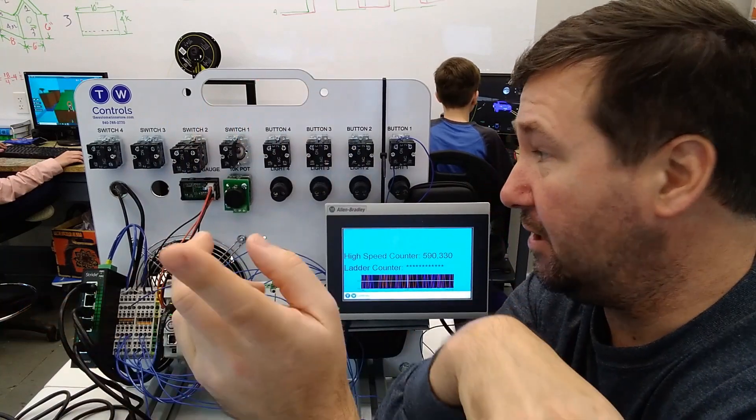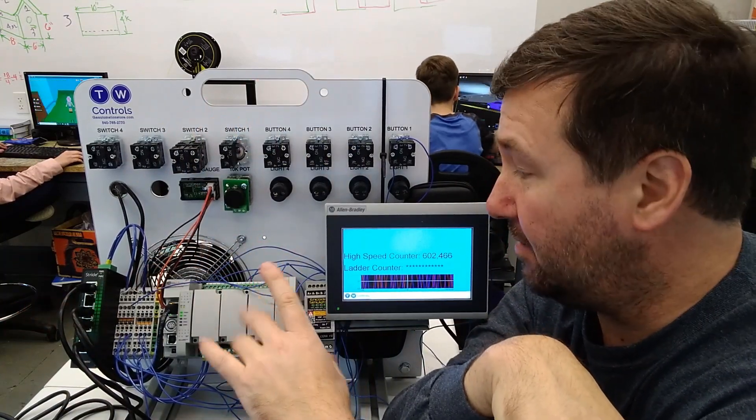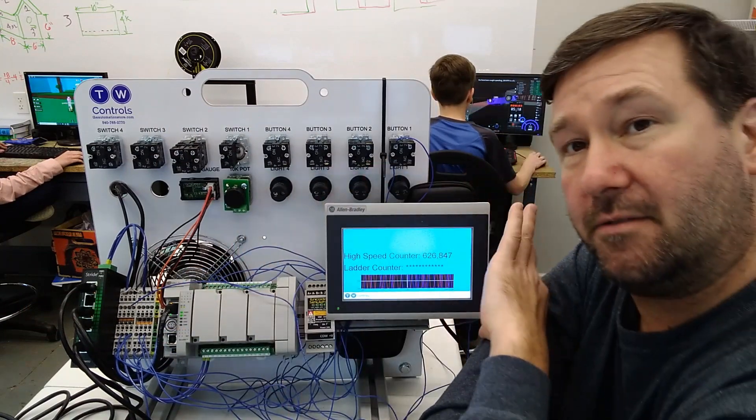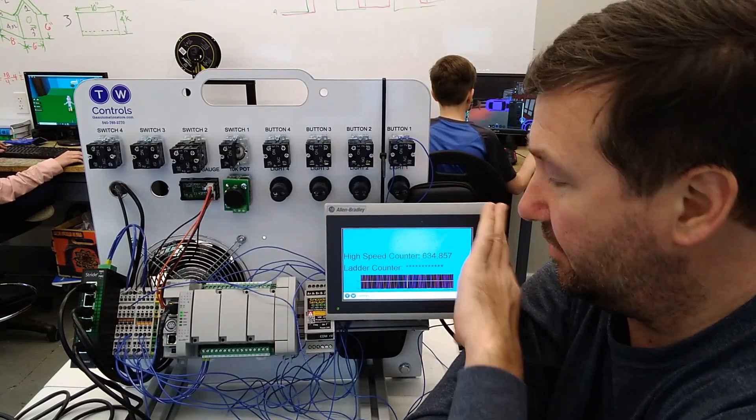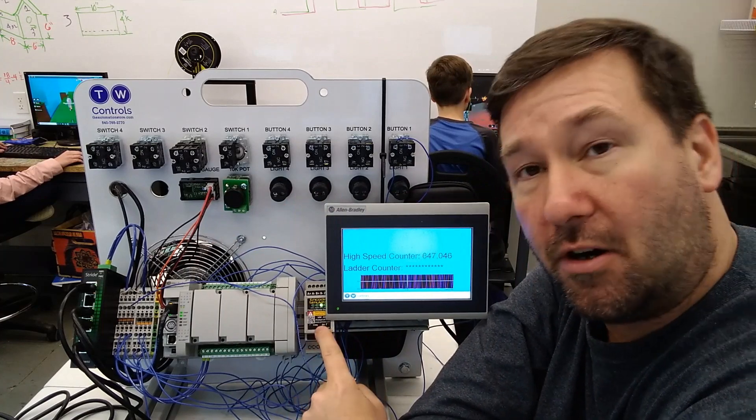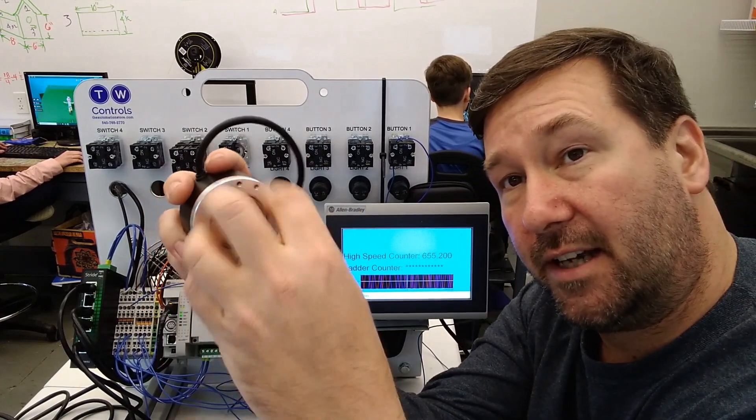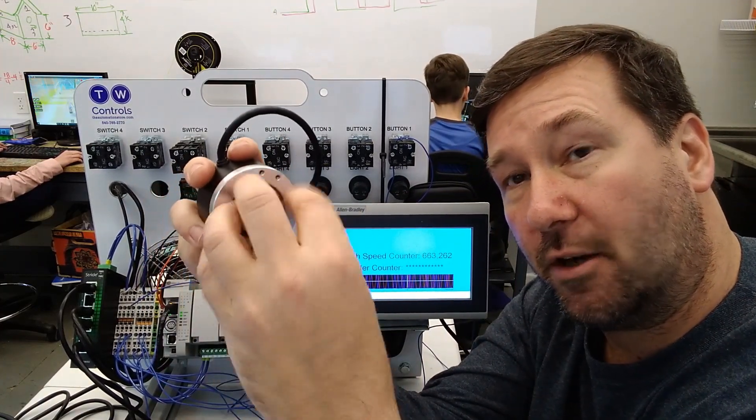For this video, we're going to be using one of our PLC trainers. This is a micro 850 PLC trainer that we've relocated the HMI to the back of, and we're going to be using our encoder simulator. That way I don't have to sit here and spin the encoder forever.